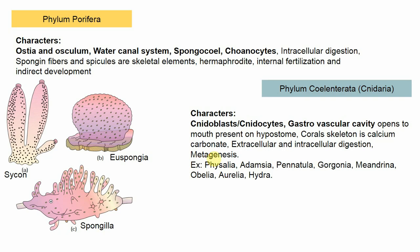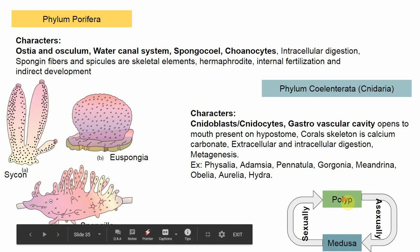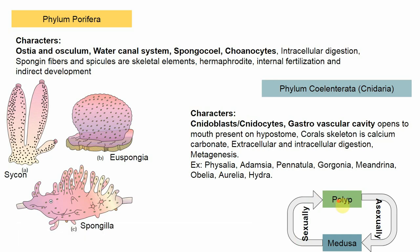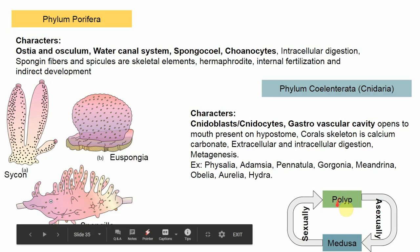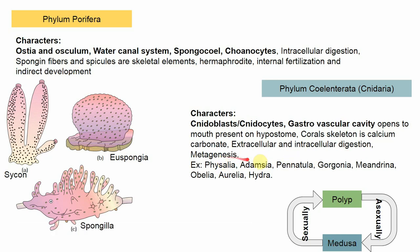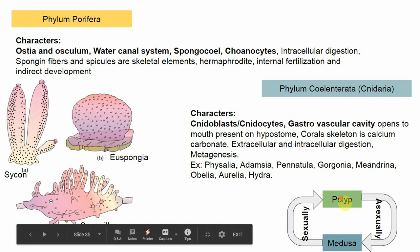Cnidarians are found in two forms: polyp form and medusa form. The polyp reproduces asexually to give medusa, and medusa reproduces sexually to give the polyp. Polyps are cylindrical in body structure and sessile — they do not move from place to place. Medusa are free swimming with an umbrella-like body structure. This alternation of generation from polyp to medusa and back is called metagenesis.